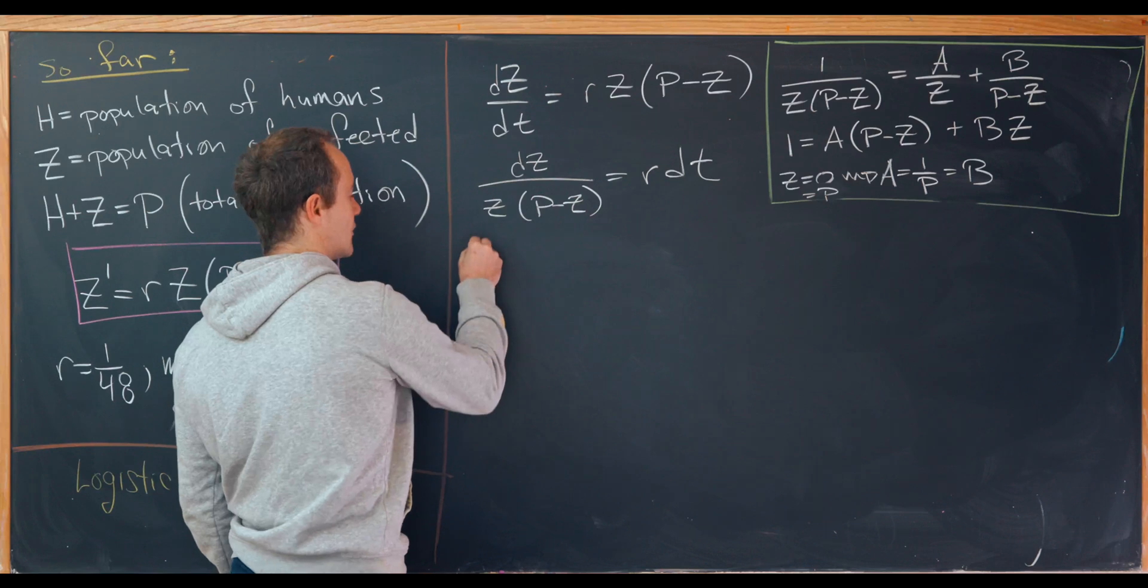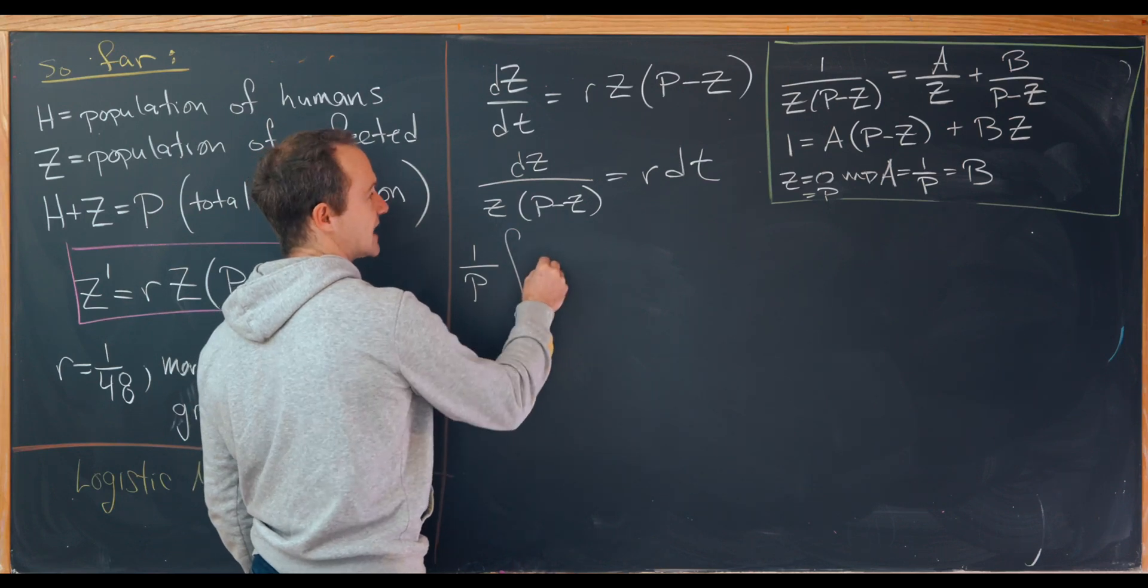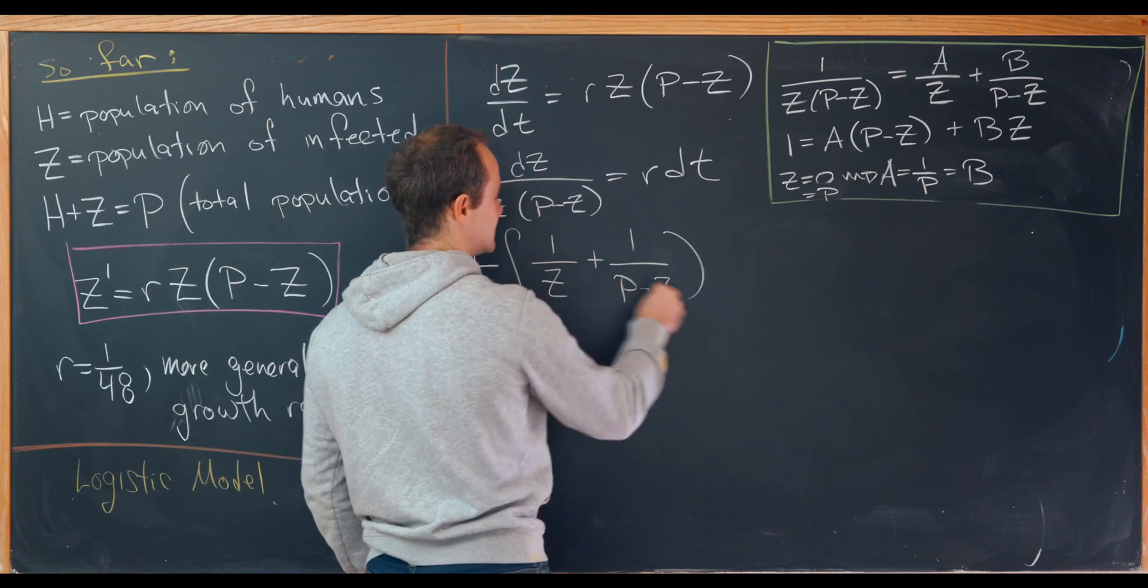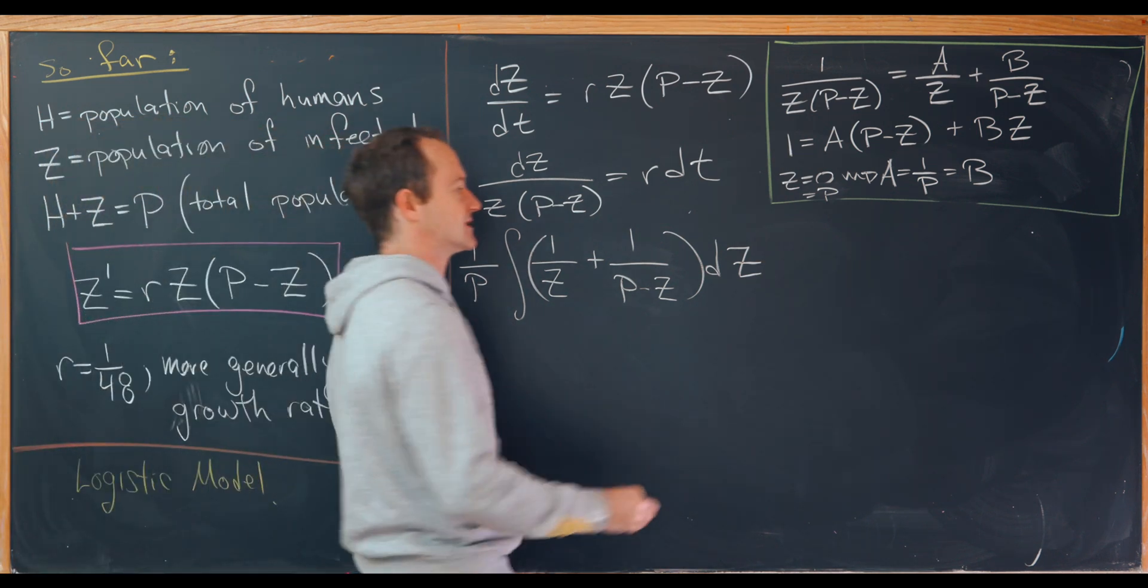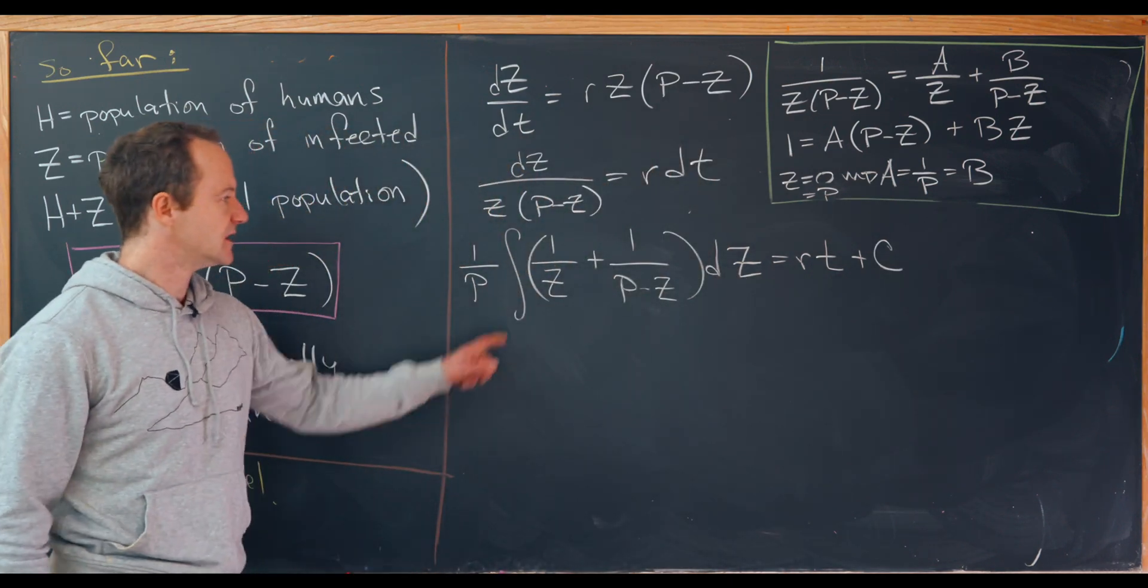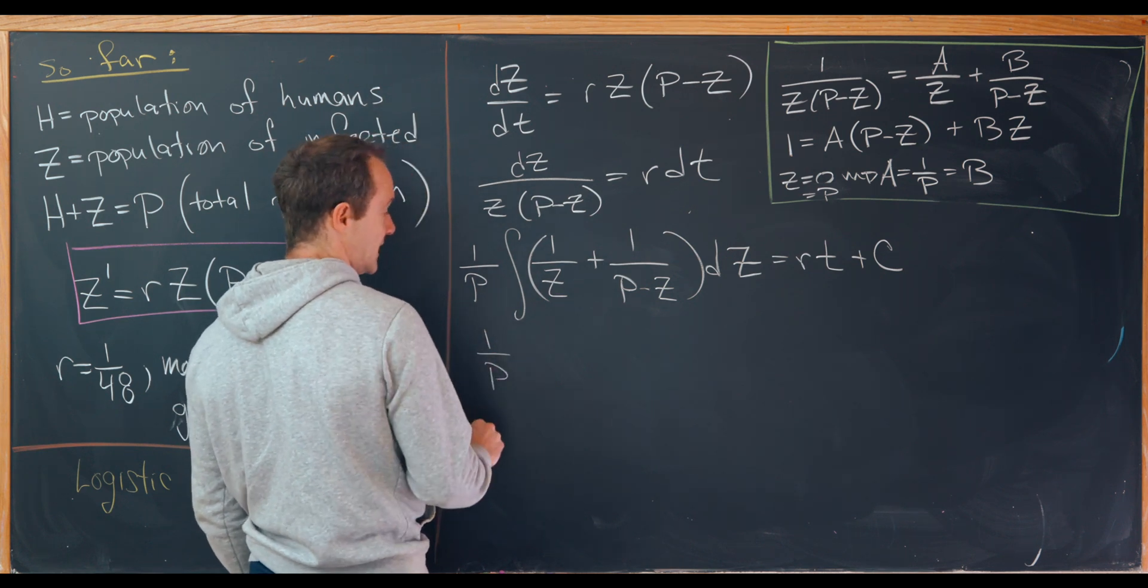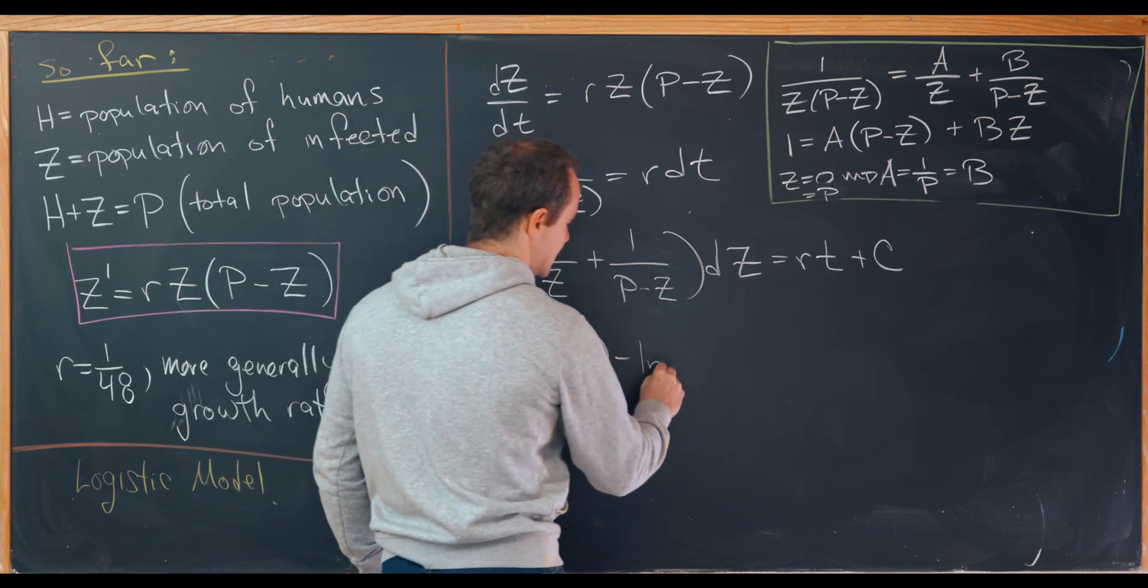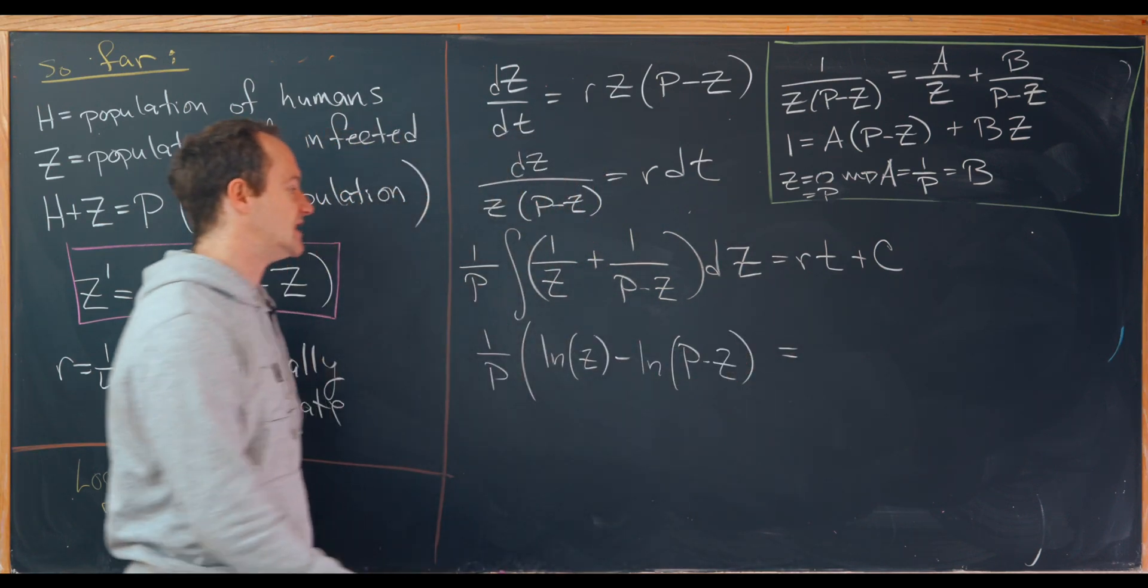That means that we can write this left-hand side after maybe setting up the antiderivative as the antiderivative of 1 over Z plus 1 over P minus Z, dZ. And then we can maybe just go ahead and take the antiderivative of the right-hand side. That will give us R times T plus some constant. Now taking the antiderivative of this left-hand side will give us 1 over P. And then we'll have the natural log of Z. And then minus the natural log of P minus Z. And then we have that equals RT plus C.